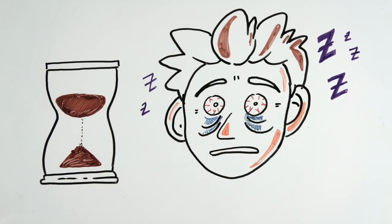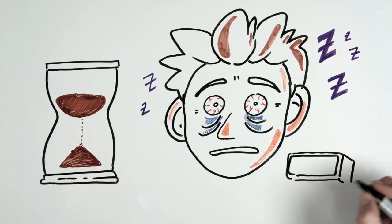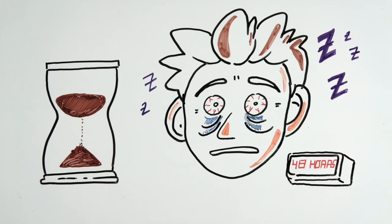Researchers have discovered that most people in these conditions reach up to a 40-hour cycle: 36 hours of activity and 12 hours of sleep.